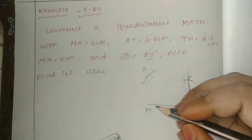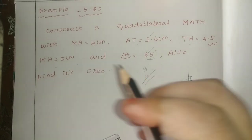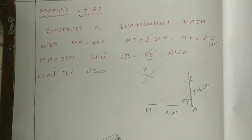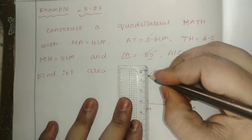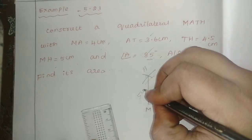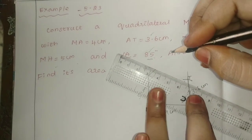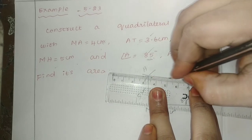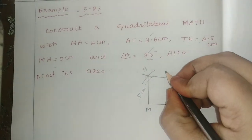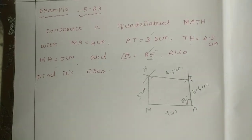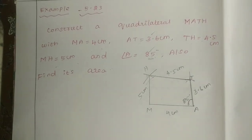That is MH equal to 5 cm. So now the rough diagram is complete with all four sides MA = 4 cm, AT = 3.6 cm, TH = 4.5 cm, MH = 5 cm, and angle A = 85 degrees. This is the rough diagram.